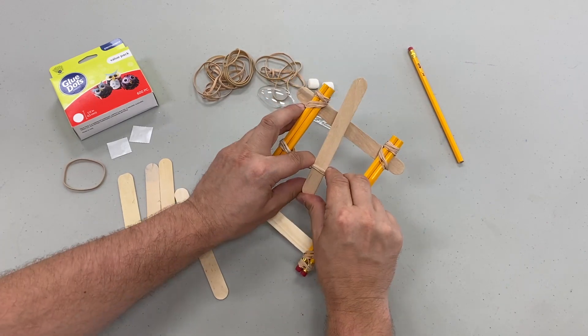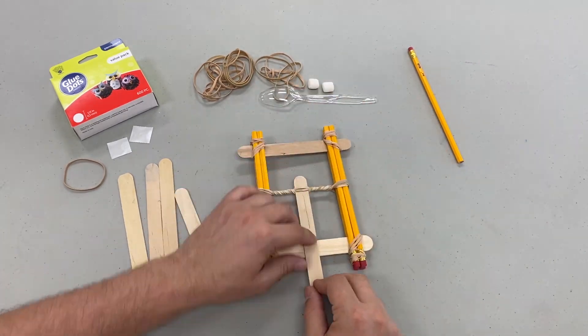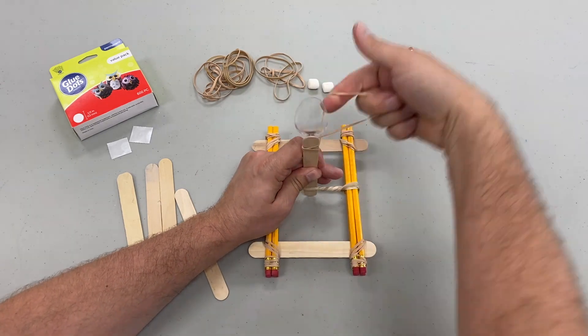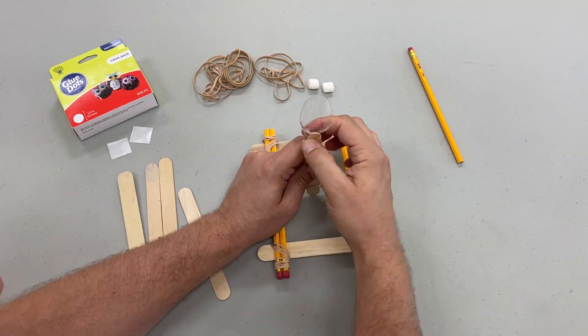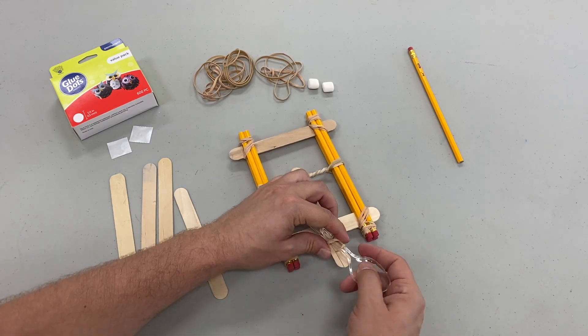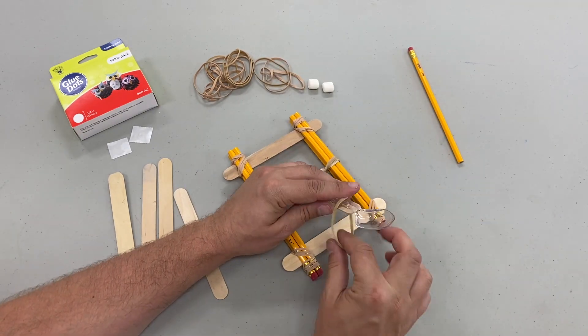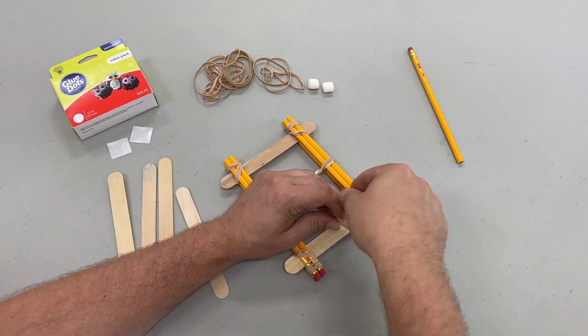Next we're going to take our craft stick and push it up so that it creates a lever. We are then going to secure the spoon onto the craft stick using a rubber band. Now I like to use two rubber bands here, one at the base and one near the top of the spoon to make sure that it holds on firmly.